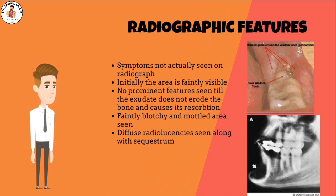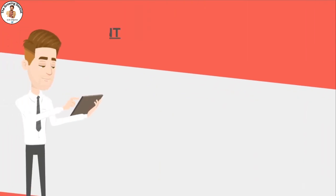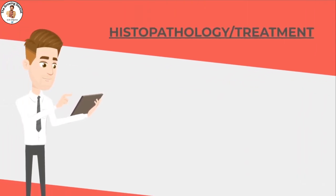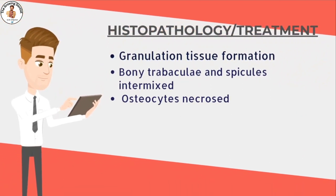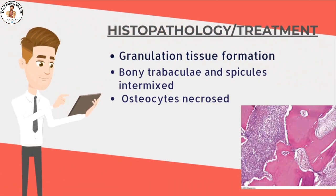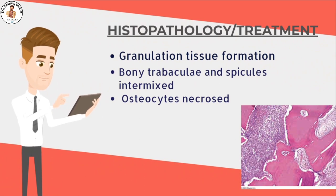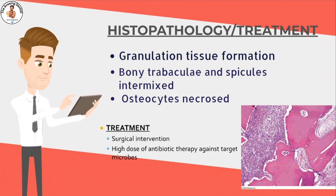Then, when the bone is completely involved, diffuse radiolucencies appear along with sequestrum. Histopathology shows granulation tissue formation along with numerous neutrophils, debris and fibrin, with bony trabeculae and spicules intermixed, and osteocytes being necrosed. Treatment includes surgical intervention with high-dose antibiotic therapy against targeted microbes.